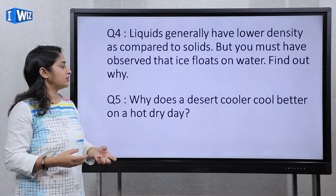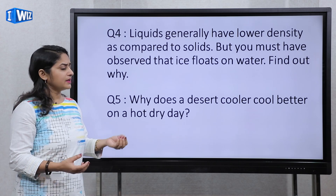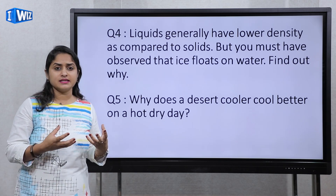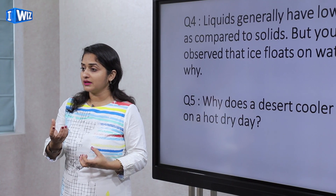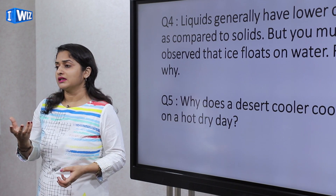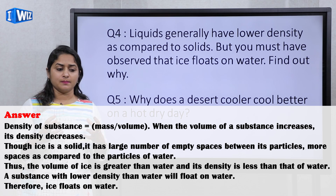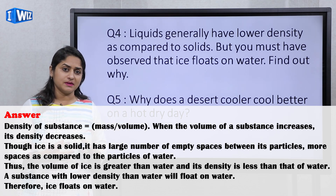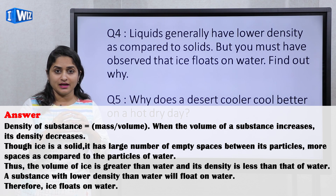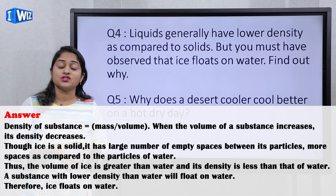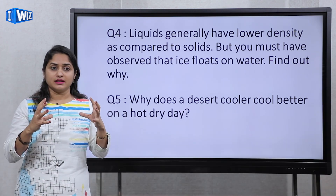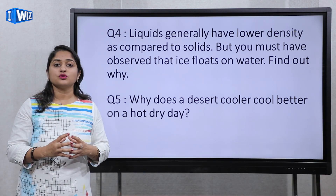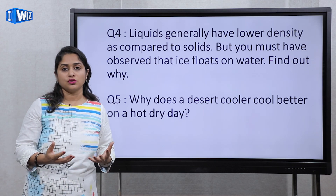Ice floats on water. Liquids generally have less density, and whatever has less density floats on top. But ice is a solid — so how does it float? When you freeze water to make ice, hydrogen bonding creates vacant spaces in a cage-like structure. This increases the volume of ice, and since mass stays the same but volume increases, density decreases — and ice floats on water.